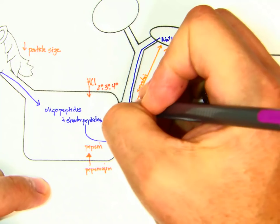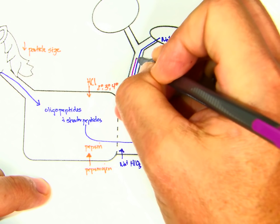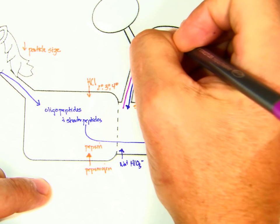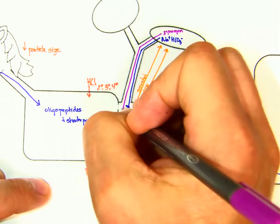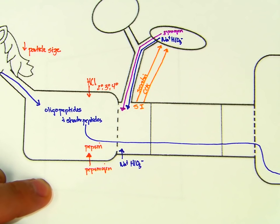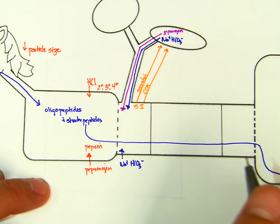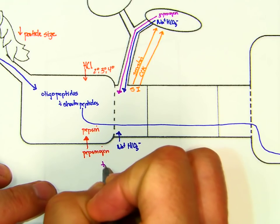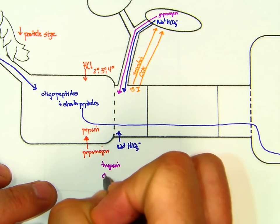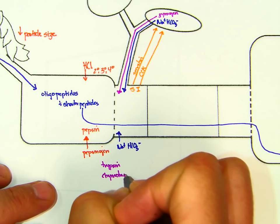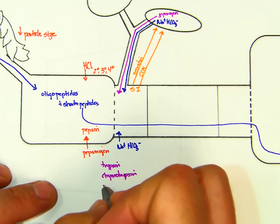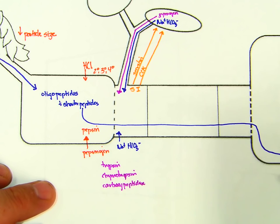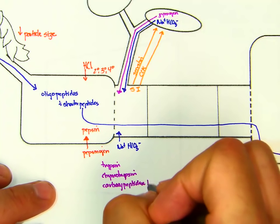And then the horse will produce pancreatic zymogens. And by now, we should know all of those, and so we're not going to write them again. I mean, we'll write them, but we won't write the details. In their active form, that's going to look like trypsin, chymotrypsin, and carboxypeptidase A and B.